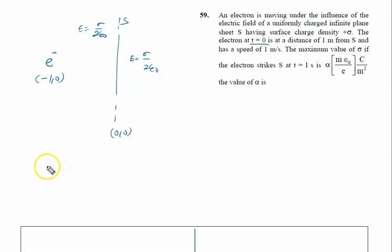The maximum value - distance 1 meter from sheet and has a speed 1 meter per second. Its initial speed is given as 1 meter per second. The maximum value of sigma if the electron strikes at t equal to 1 second.